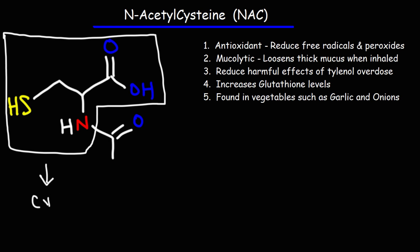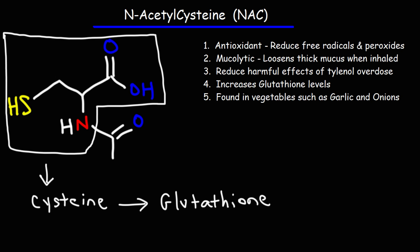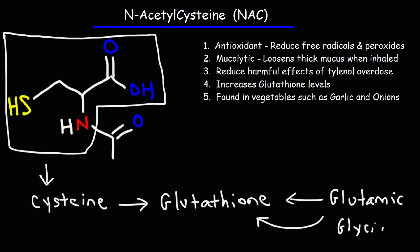When NAC is converted to cysteine, cysteine is the fuel that increases glutathione levels. Glutathione is a tripeptide consisting of three amino acids: glutamic acid, glycine, and cysteine. But cysteine is considered the rate-limiting factor in the production of glutathione. So one of NAC's most important effects is that it can increase glutathione levels.